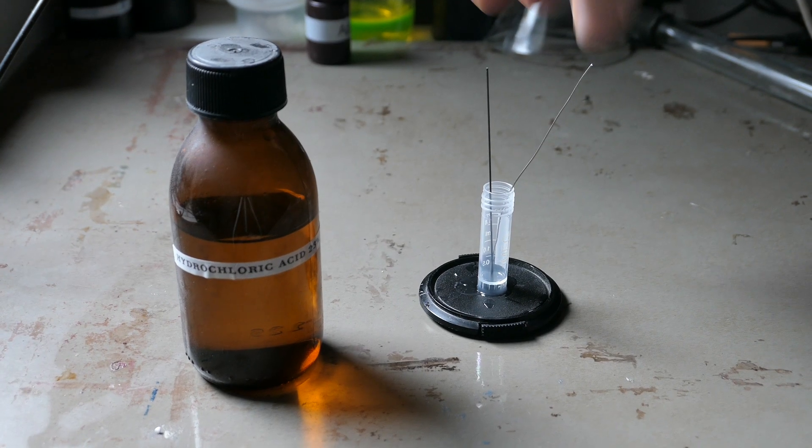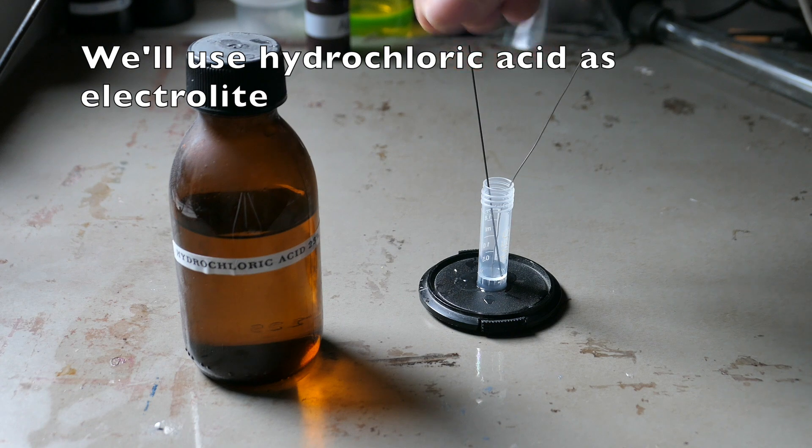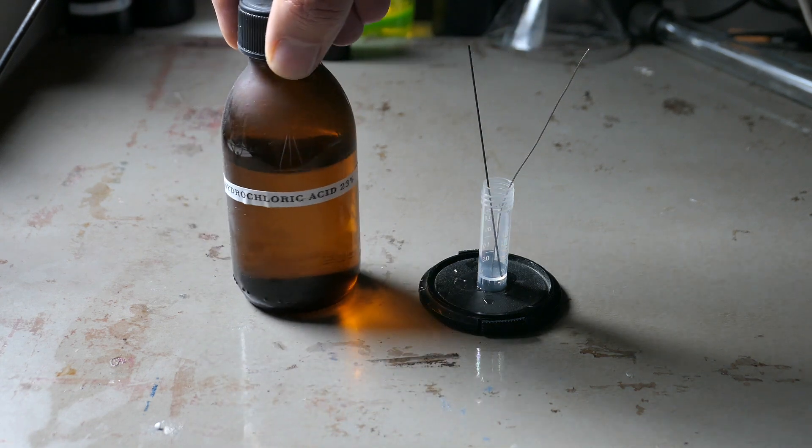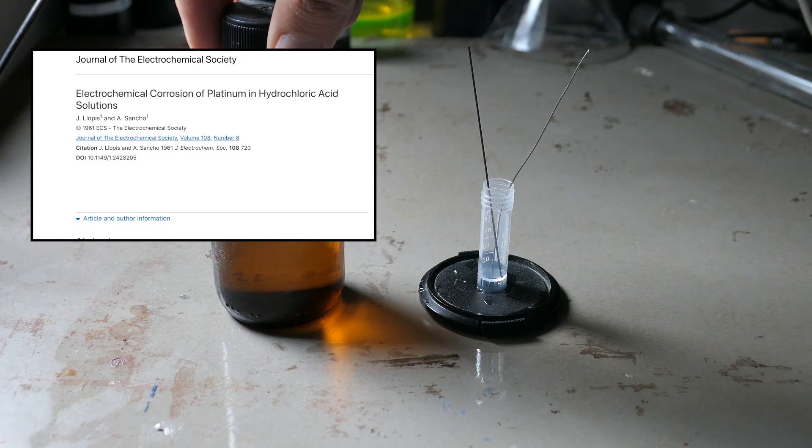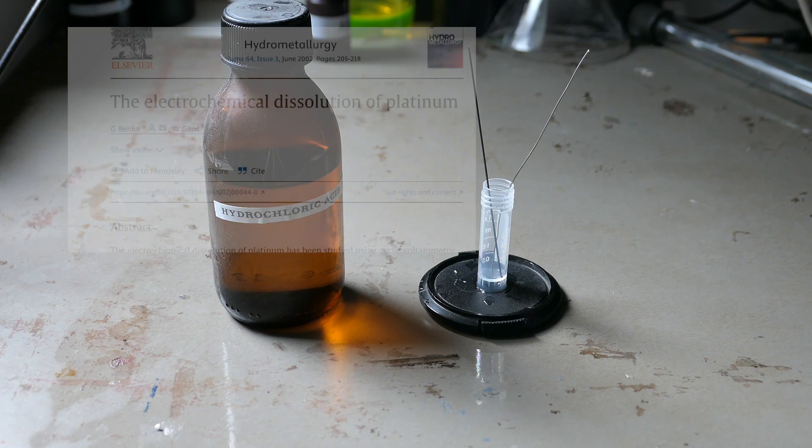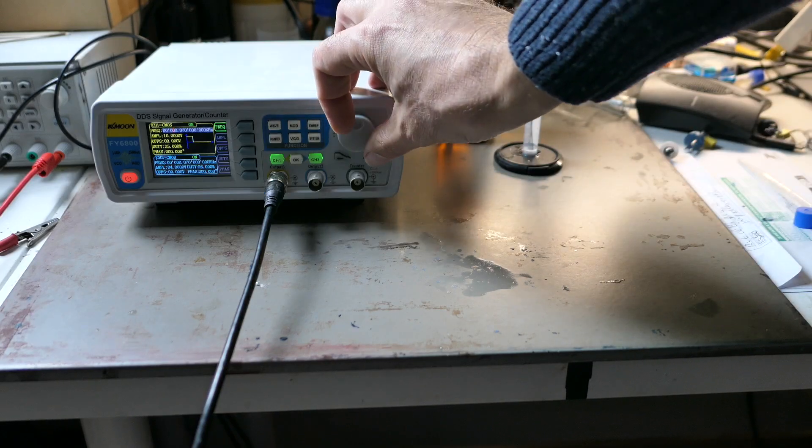For the electrolysis setup I'm going to use a carbon electrode as the cathode and the platinum wire as the anode. Several research papers explain that to prevent the platinum from passivating, it's important to use either a very low current or alternating current.